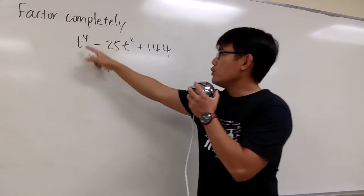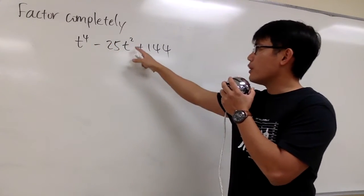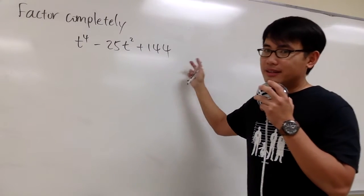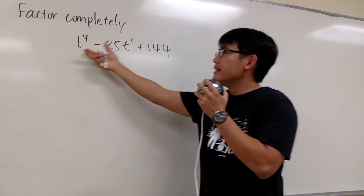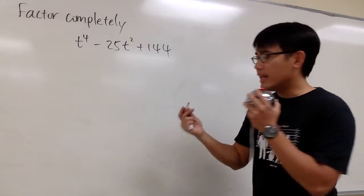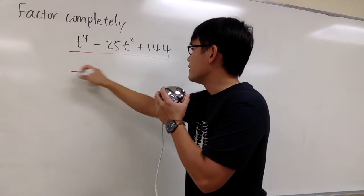We are going to factor this out. We have t to the fourth power minus 25t squared plus 144. This is a trinomial, and we see that there is no common factor that we can factor out. So we'll go ahead and use the t-totter method to factor this out.